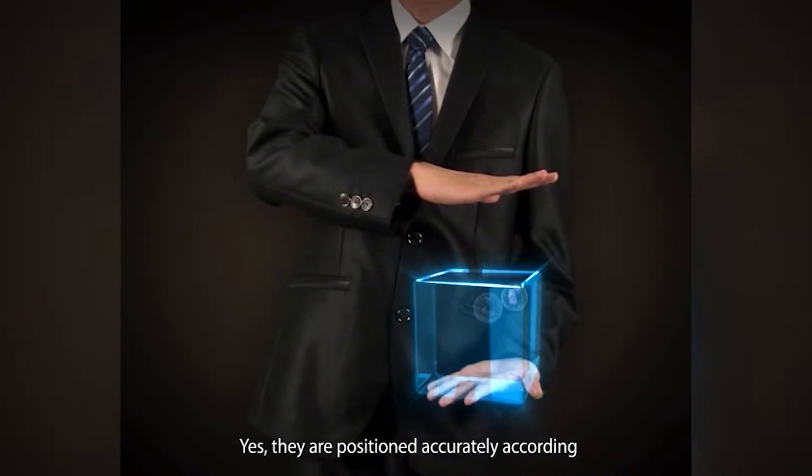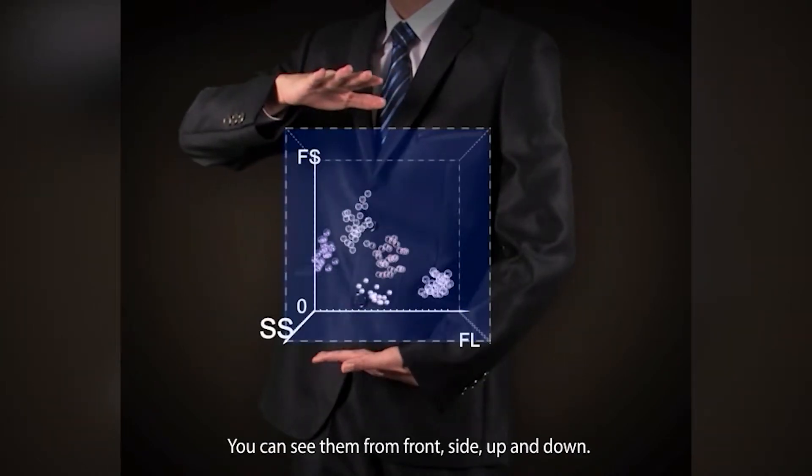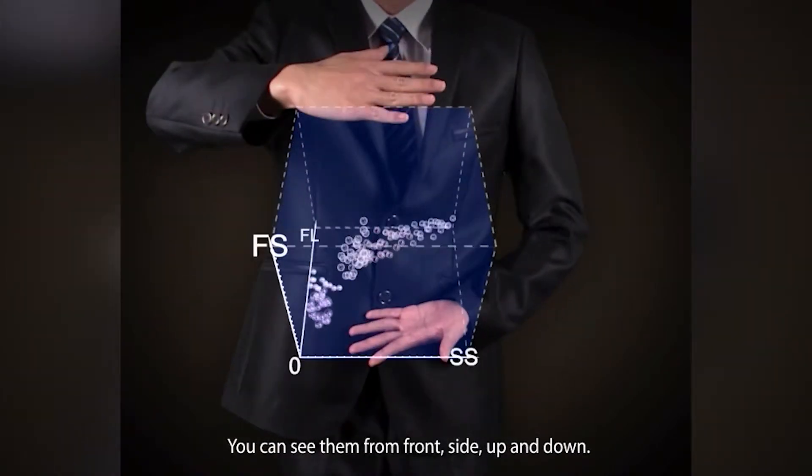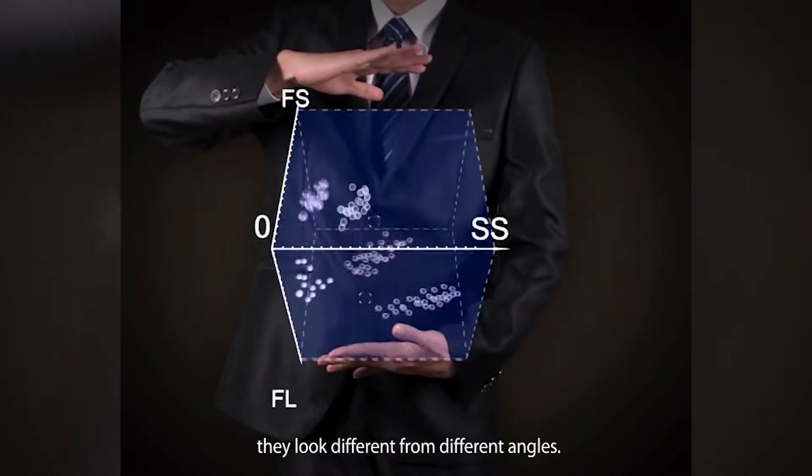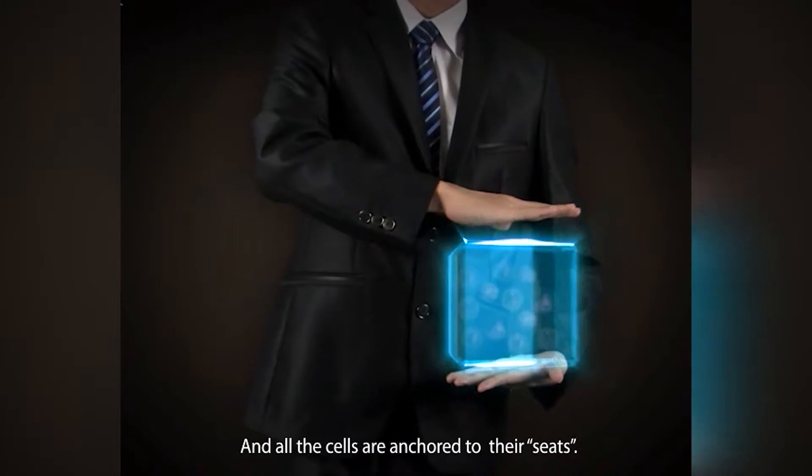Yes, they are positioned accurately according to the space where their kind belongs. You can see them from the front, side, up, and down. They look different from different angles, and all the cells are anchored to their seats.